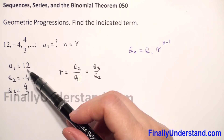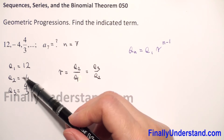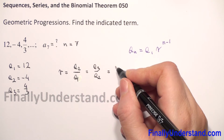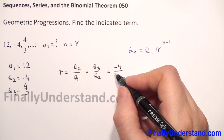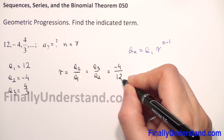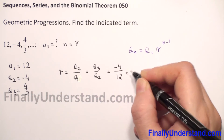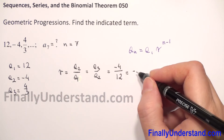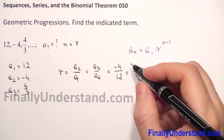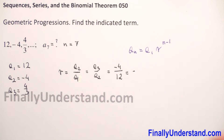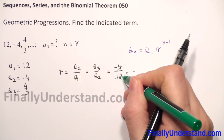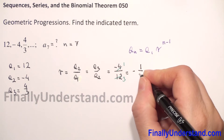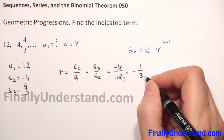Or you can use a3 and a2, so it will be a3 over a2. Let's take the first two consecutive terms since we have whole numbers: negative 4 divided by 12. Negative over positive gives a negative result. We reduce 4 and 12 by 4, giving 1 and 3. So the common ratio r is negative one third.